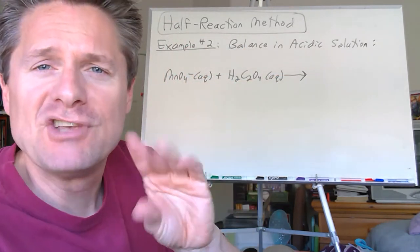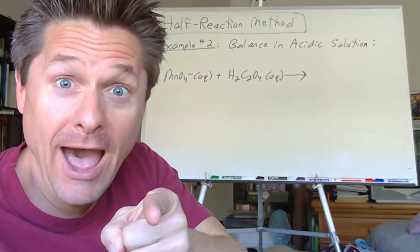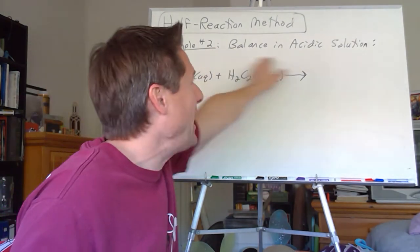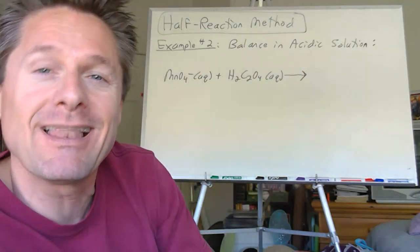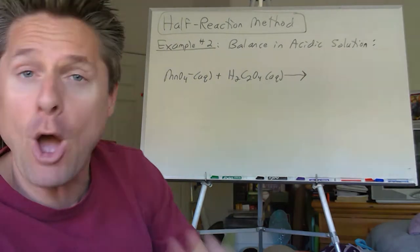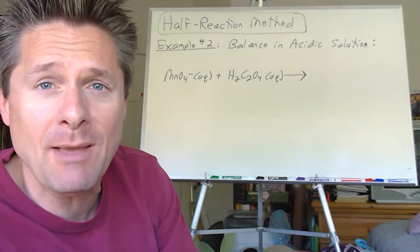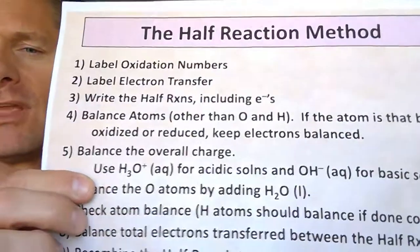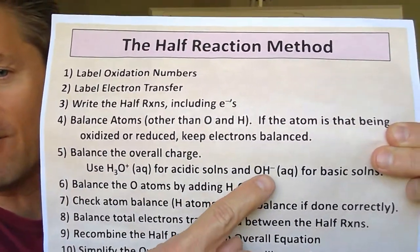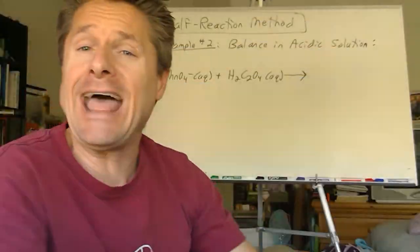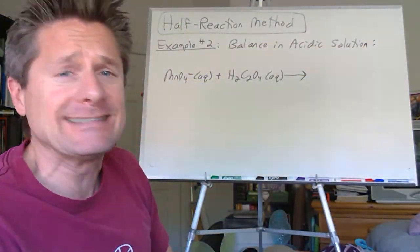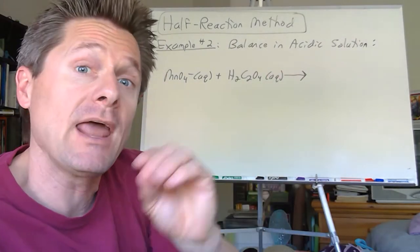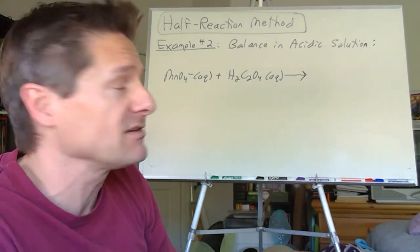Now, while I was jibber-jabbering, you finished this problem, right? Distraction tactic. Balance the following in acidic solution. The last one we did was basic solution — the only difference is step five. Everything else is exactly the same. We're going to use the hydronium ion to balance the charge instead of the hydroxide ion. That's the only difference. When predicting products, you've got to make sure you're looking at the redox table correctly.